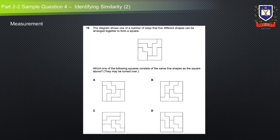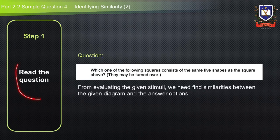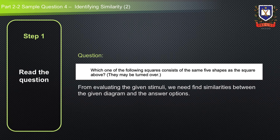Let's apply the general approach method to solve this question. The first step is to read the question and determine what it is asking. Since it is asking which one of the following squares consists of the same five shapes as the square above, we need to evaluate the given stimuli and find similarities between the given diagram and the answer options. The question also notes that the shapes may be turned over, which is a fact we need to keep in mind.